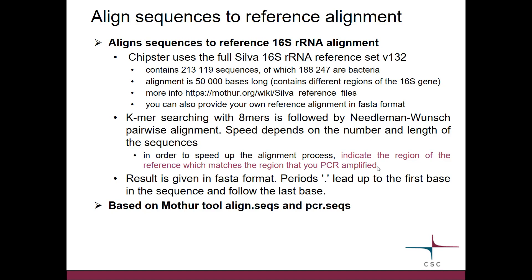If you don't know the coordinates of the V2 region in the reference, you can first align a small set of samples to the full reference alignment. And then once you know the coordinates, do the whole thing using those coordinates and just the subsection of the reference.